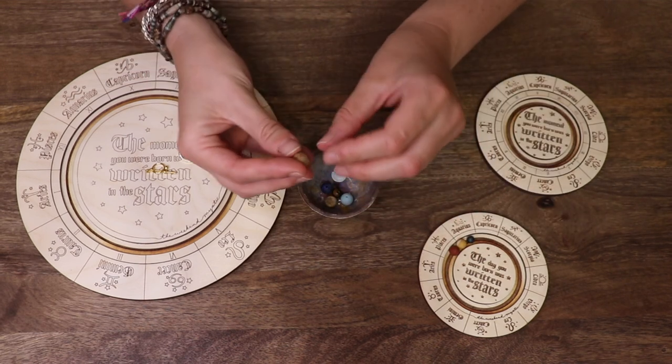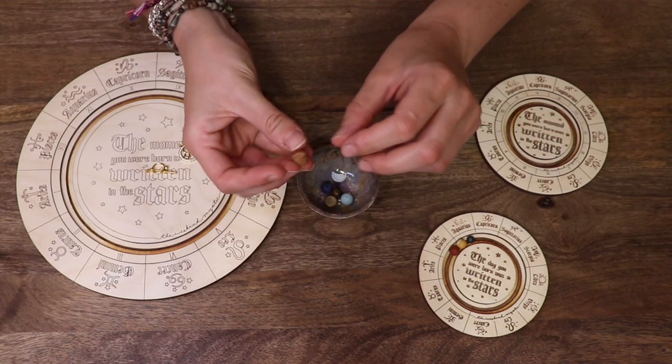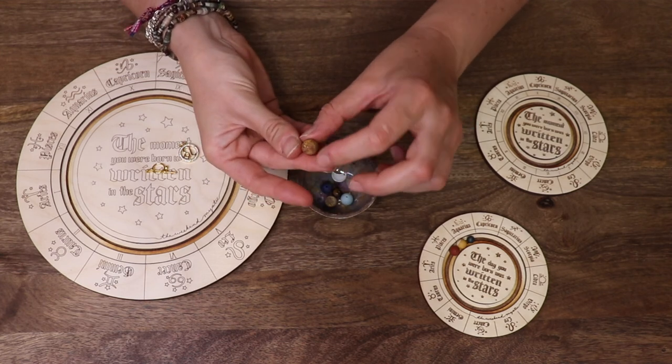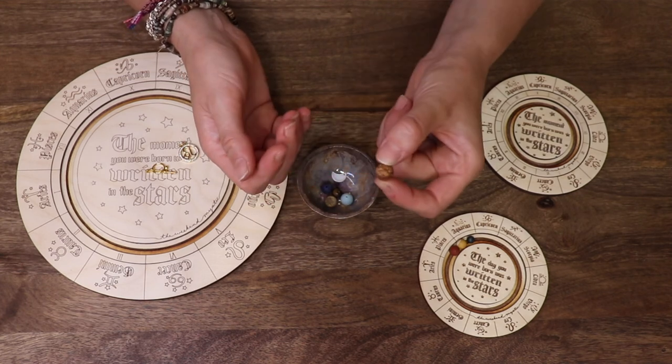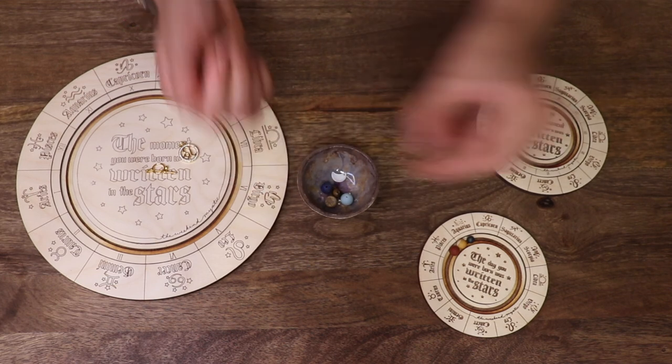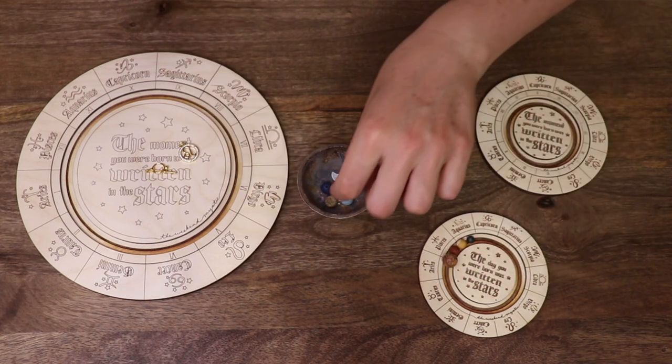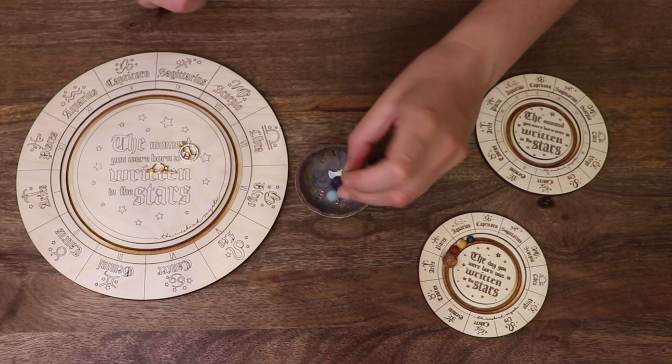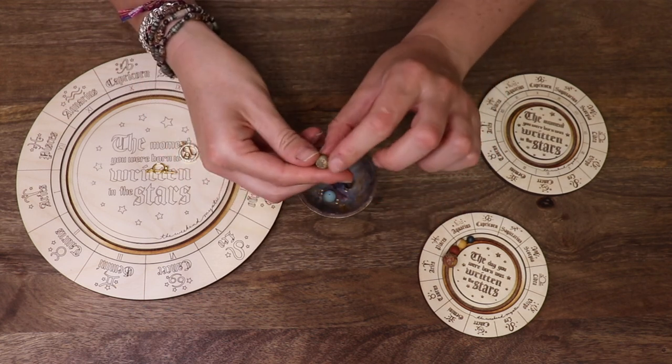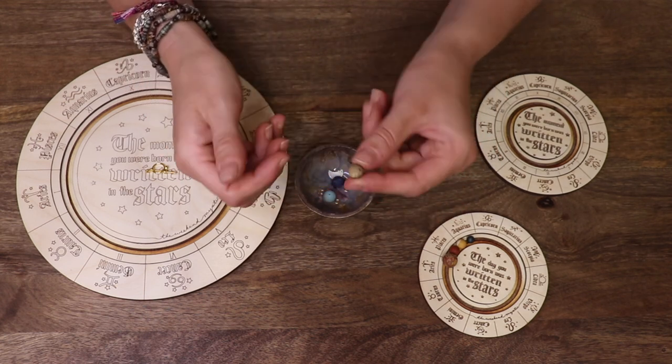Jupiter is the largest planet. So 12 millimeters works well. Then we've got Saturn. Saturn, I don't have a ring on Saturn, but Saturn is a 10 millimeter picture jasper.